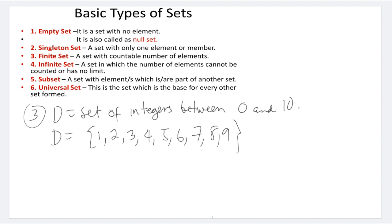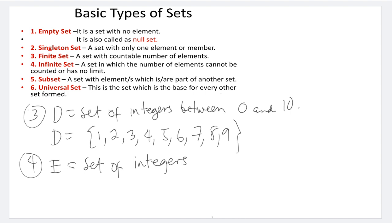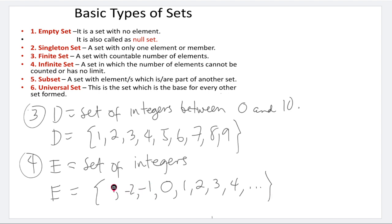An example of an infinite set is the set of integers. Its elements include 0, then 1, 2, 3, 4 to the right, and negative 1, negative 2 to the left, continuing without end. We cannot write all the elements because there are infinitely many. We cannot count the exact number of members because there is no limit.